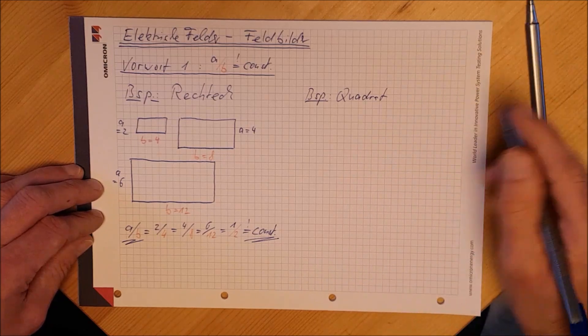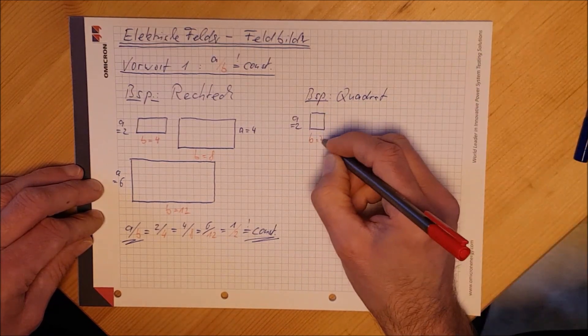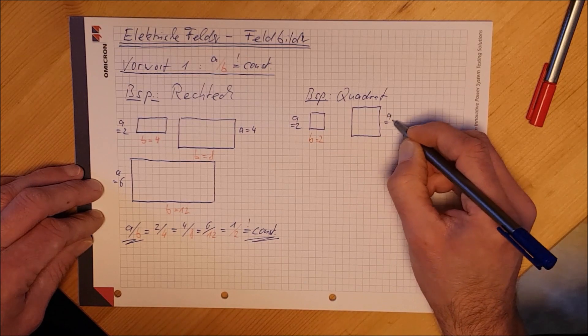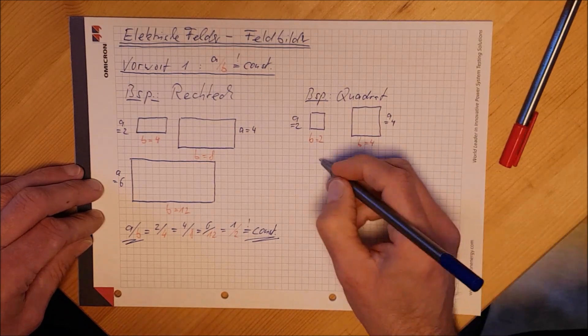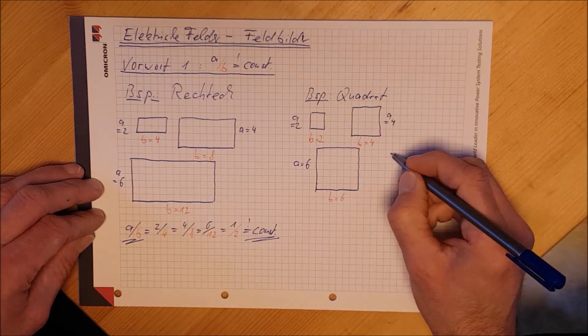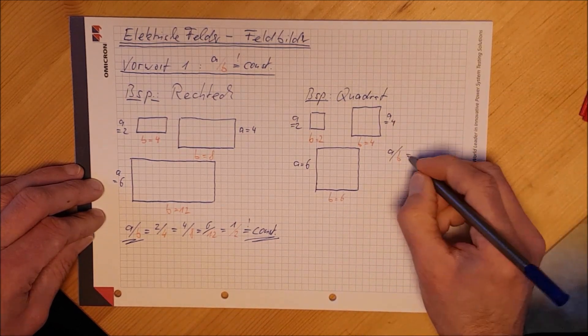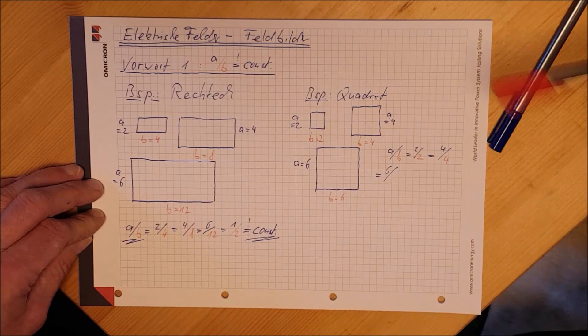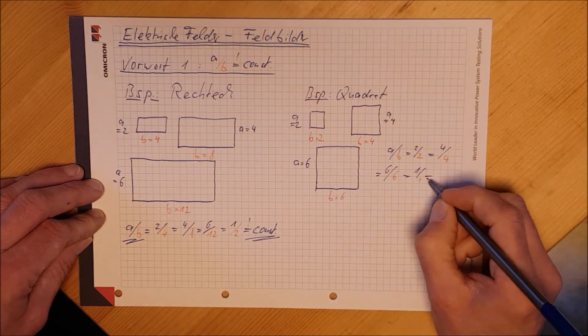Dasselbe kann man mit Quadraten machen. Hier ein Quadrat mit den Seitenlängen 2 und 2, ein größeres mit den Seitenlängen 4 und 4 und ein ganz großes mit den Seitenlängen 6 und 6. Auch hier kann der Quotient aufgestellt werden a zu b. Letztlich haben wir hier ein Seitenverhältnis von 1 zu 1 gleich konstant.